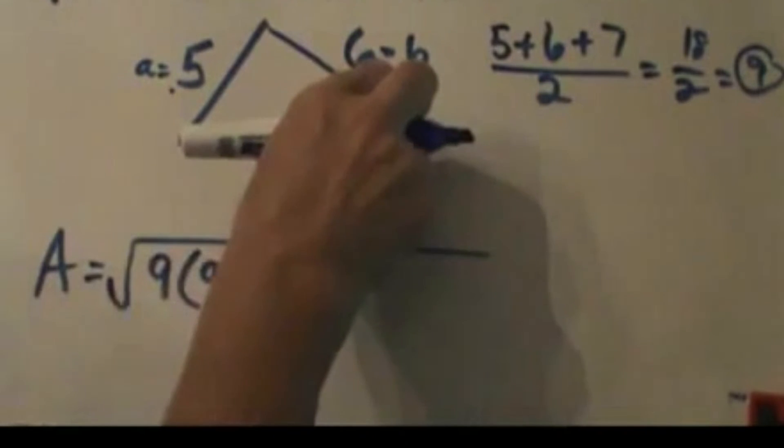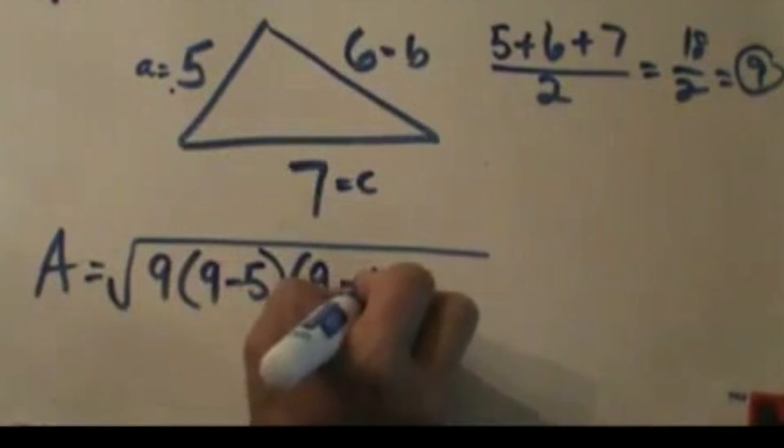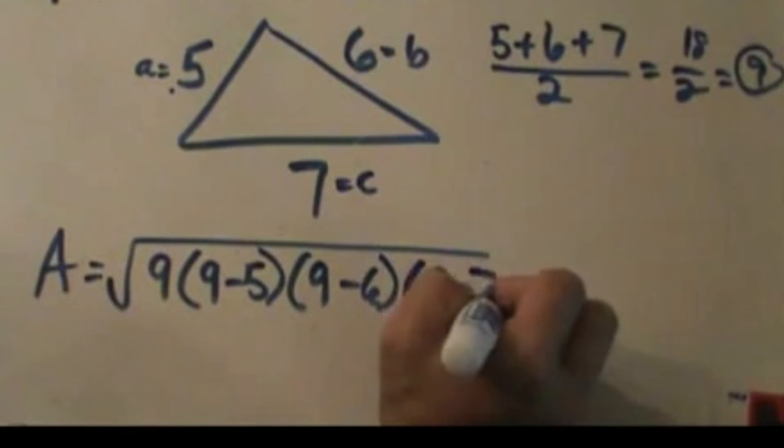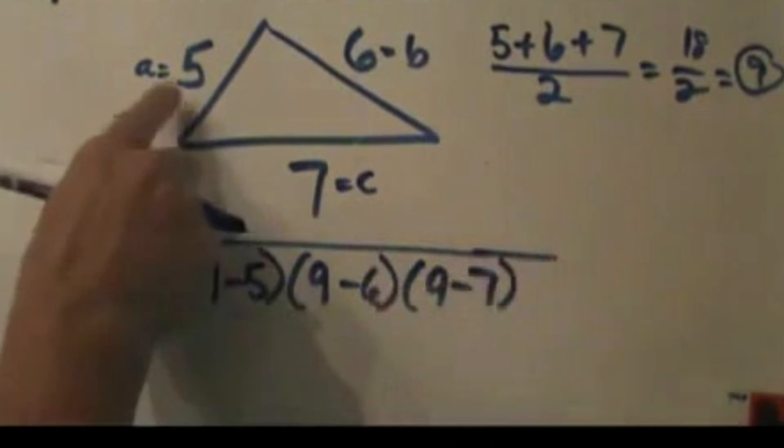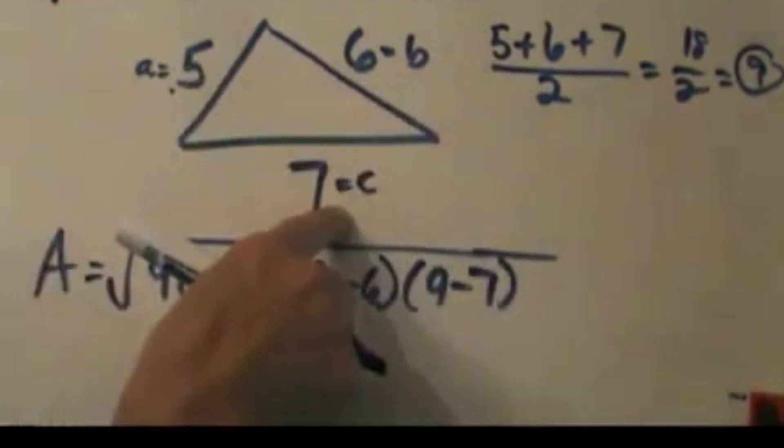And then 9 minus B, which is 6, and 9 minus C, which is 7. So I'm finding the difference between S and each of these three sides.